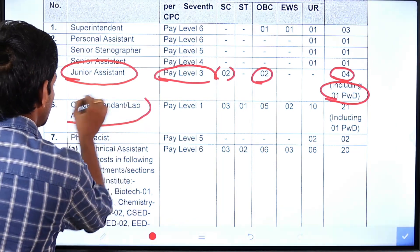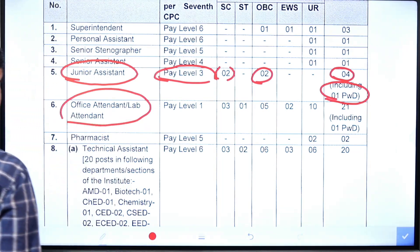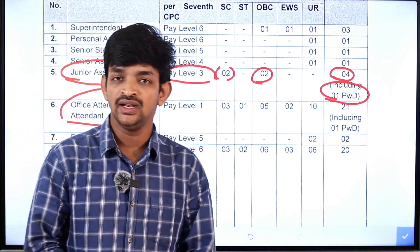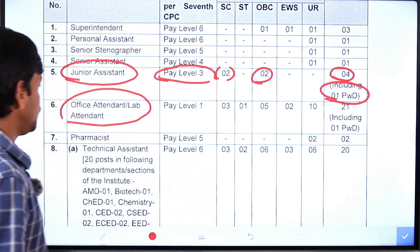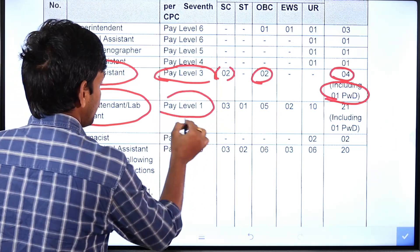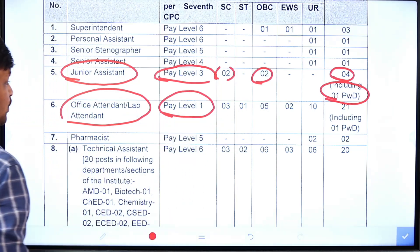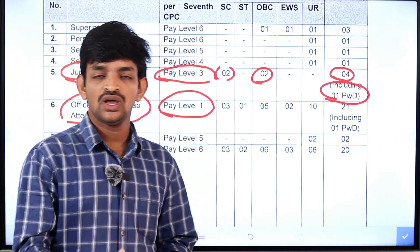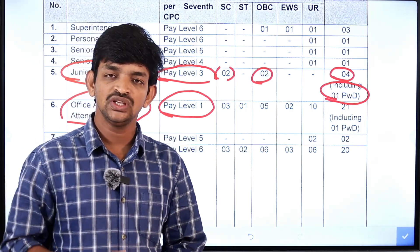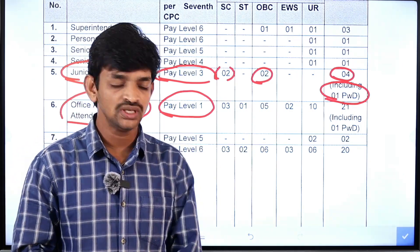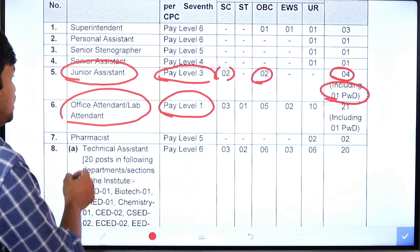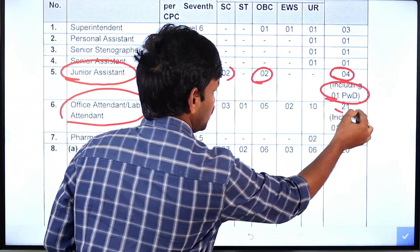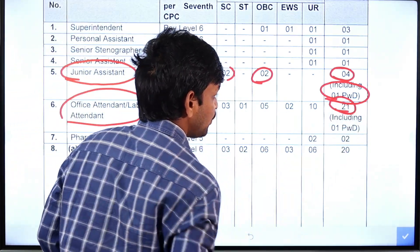Now, look at the next post — Office Attendant or Lab Attendant. This post has the same salary at Pay Level 1. There are 21 vacancies for this post.